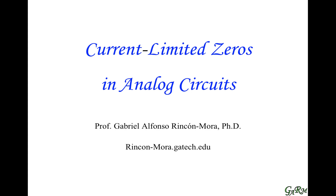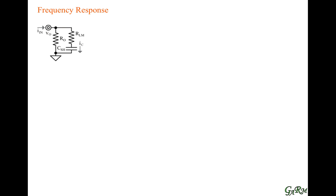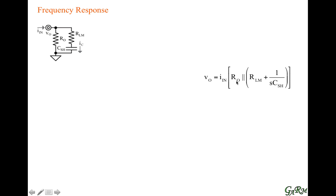This video is on current-limited zeros in analog circuits. To talk about current-limited zeros, I'd like to refer to this circuit. What we have is basically an input current flowing into this combined impedance, which is the parallel combination of an output resistor with a capacitor that has a resistor in series. The output voltage is an ohmic translation of this current into this combined impedance.